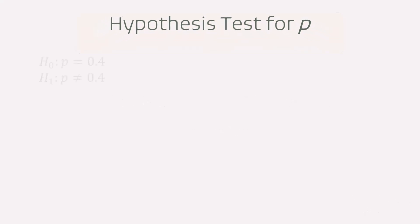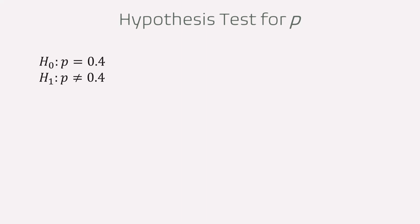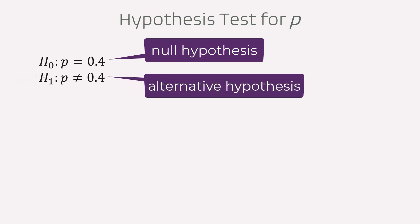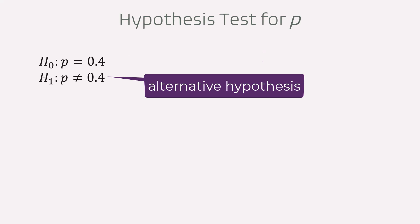Here's an example of how we state the null and alternative hypothesis for a two-tailed test. H0 is the null hypothesis which always includes equality, and HA or H1 is the alternative hypothesis which never has an equality sign. The alternative hypothesis includes the not-equal-to sign, which indicates that the proportion could be greater than or less than 0.4.